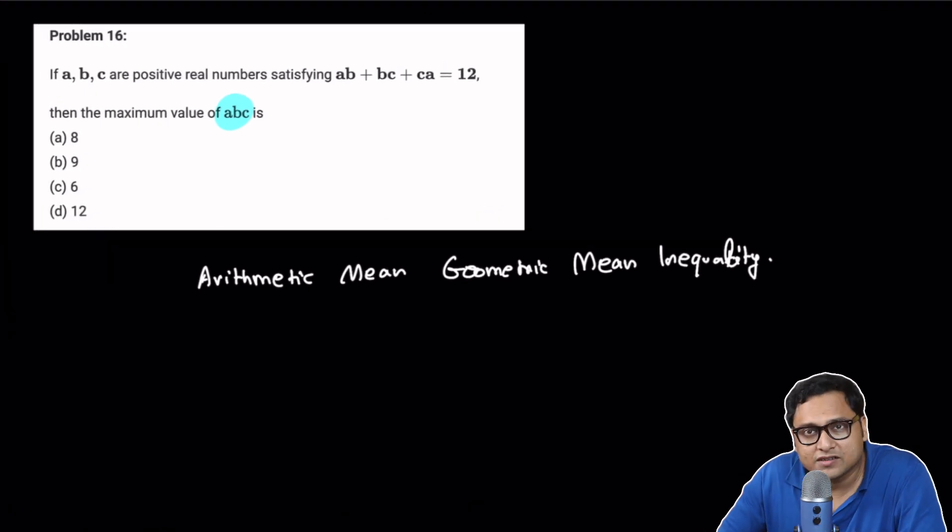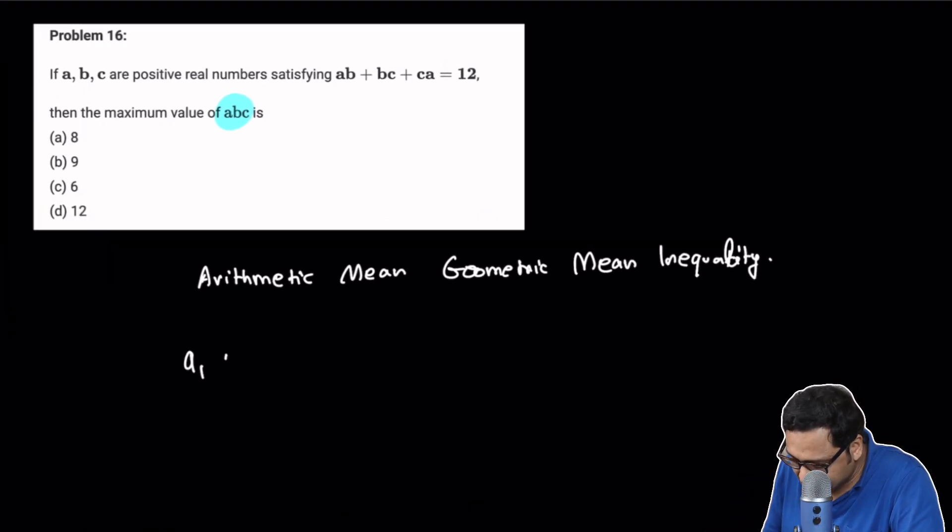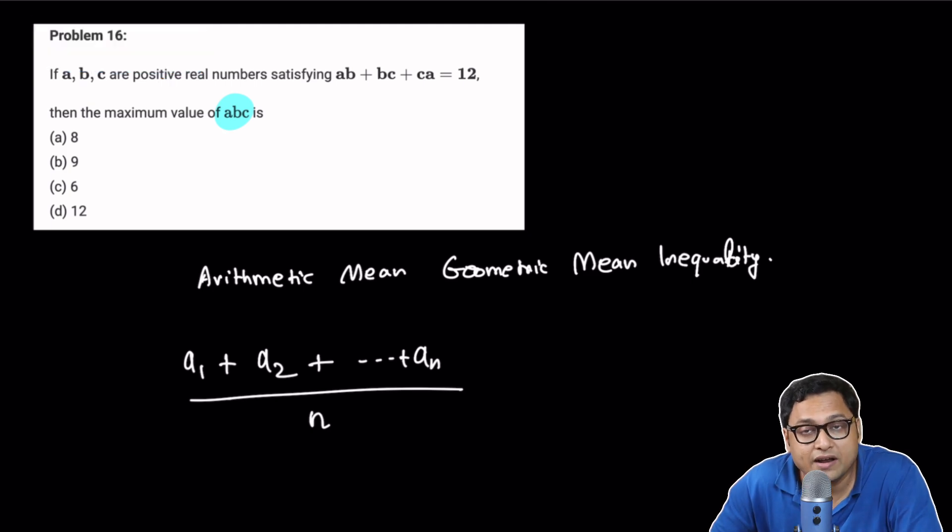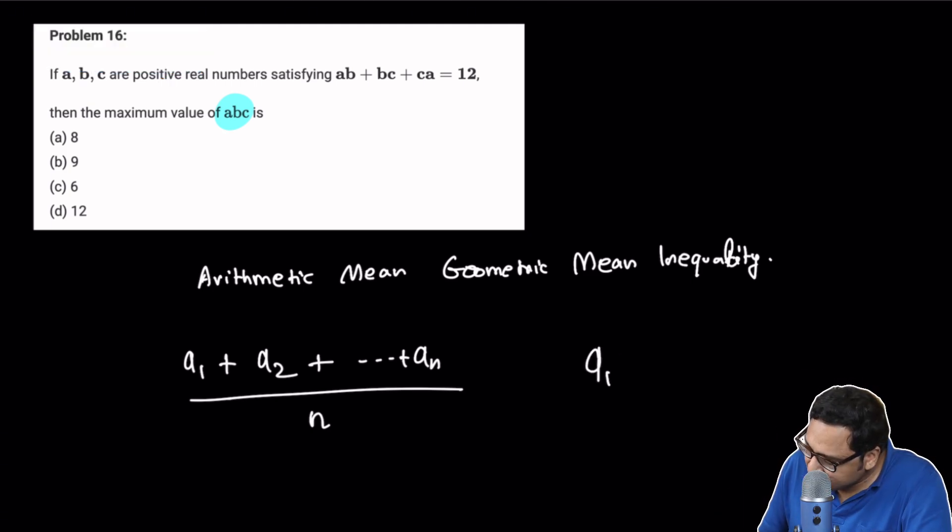But I'll give you the statement of the inequality. It says that if you have a bunch of positive numbers, let's say N positive numbers, then you can calculate the arithmetic mean or average of the numbers.